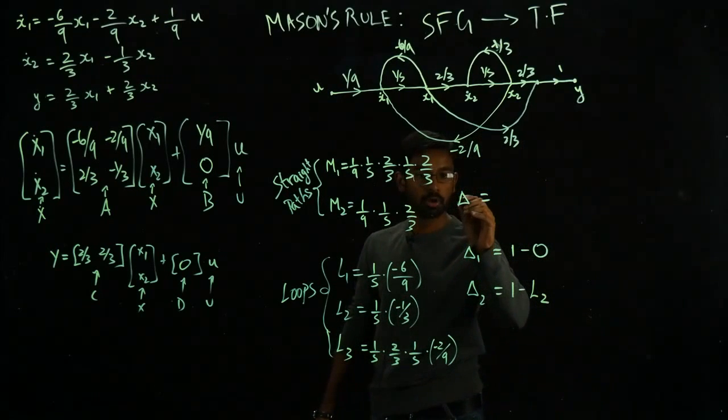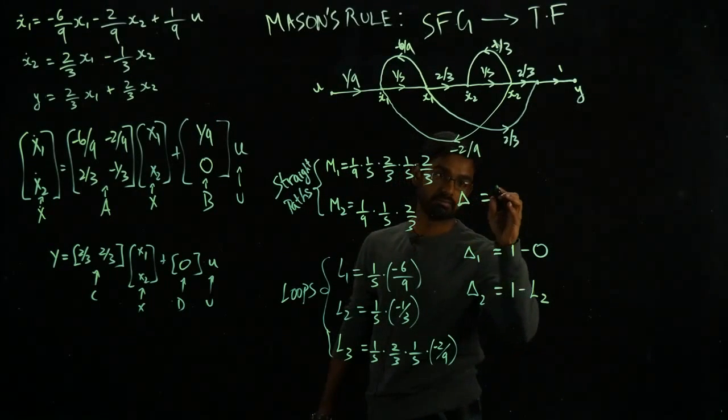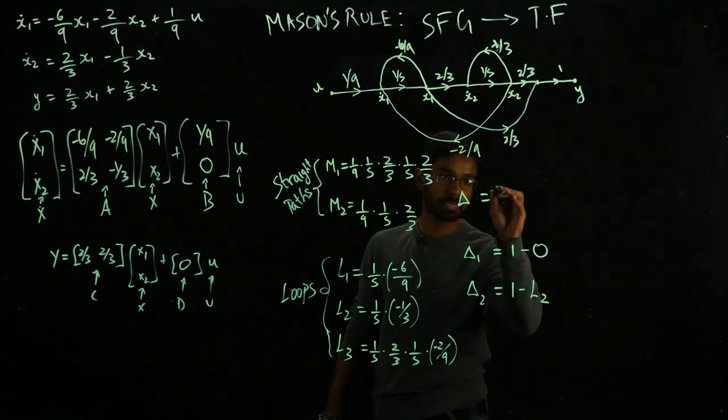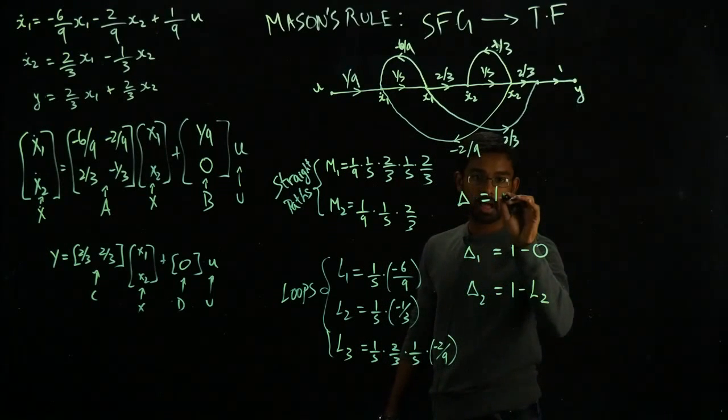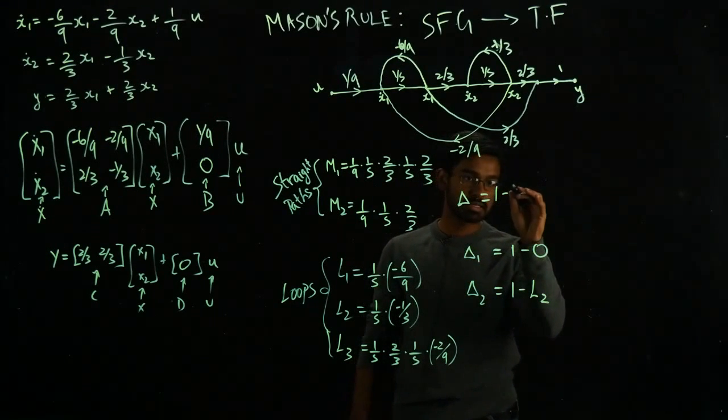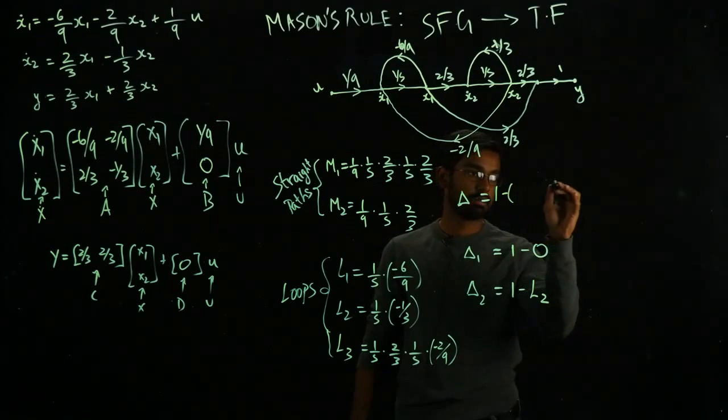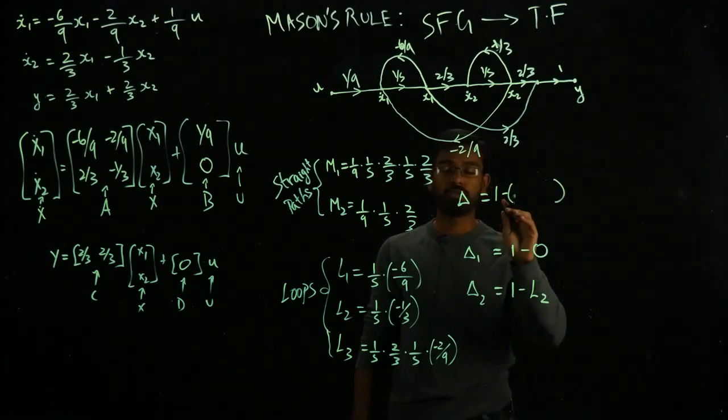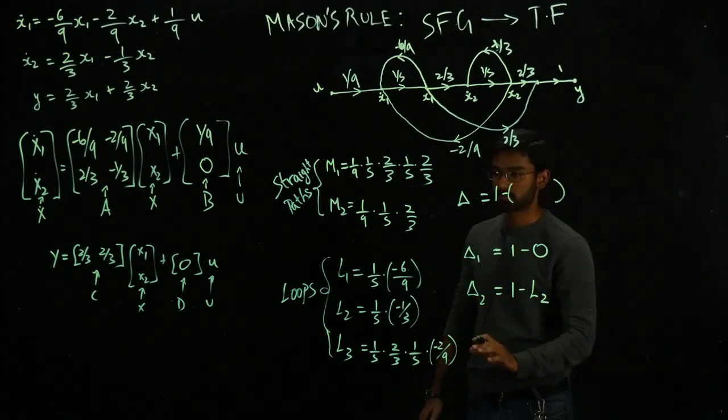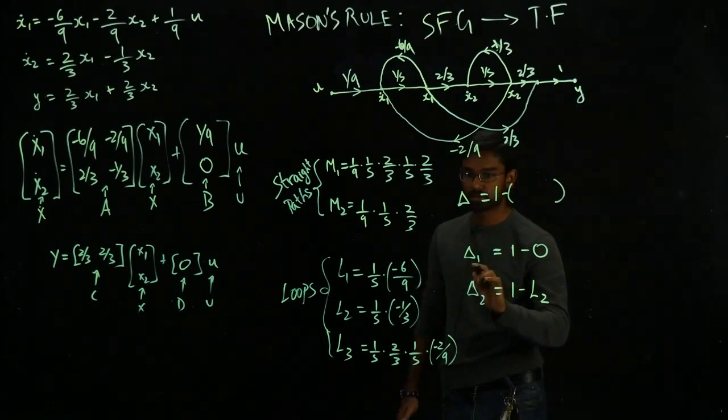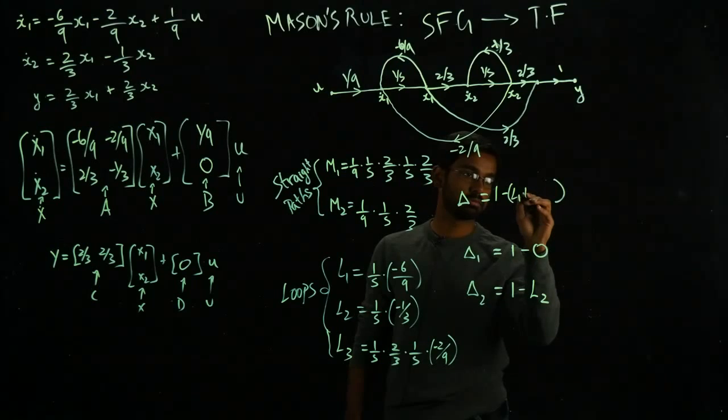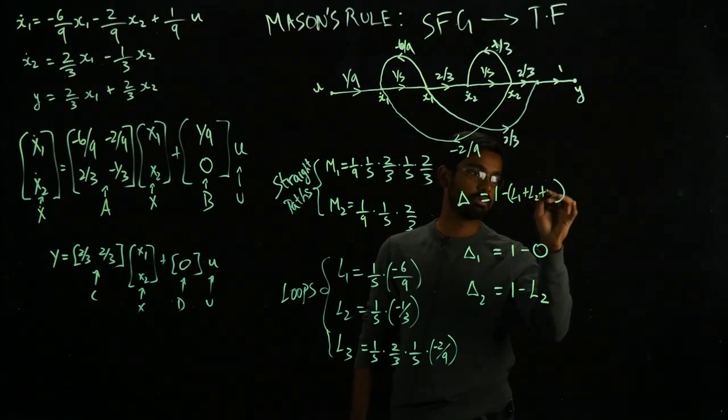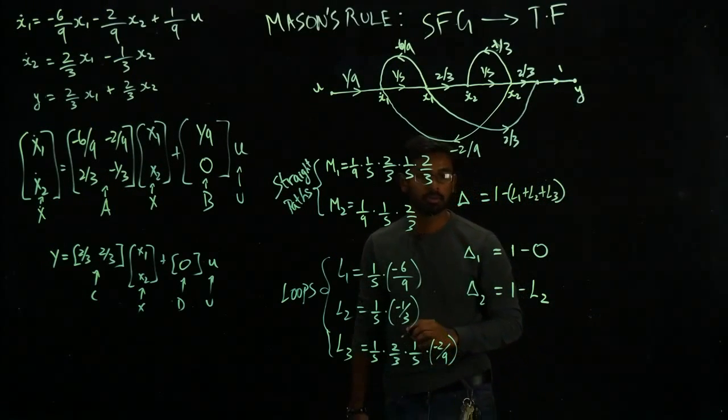So then I'm going to go ahead and write this delta. How am I going to define this guy? I'm going to start off with one, but however, I'm going to do this. Start with sum of all the loops in your system, all the individual loops in your system. So I have L1, L2, and L3. L1, L2, and L3.